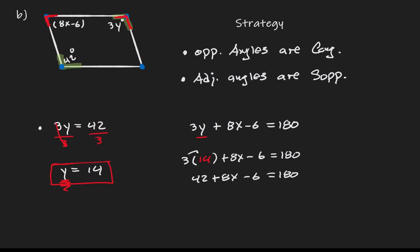Combining like terms, 42 minus 6 equals 36, so we get 8x plus 36 equals 180. Subtracting 36 from both sides gives 8x equals 144. Dividing by 8, we reach our conclusion: x has a value of 18.